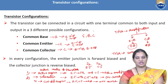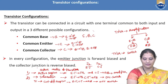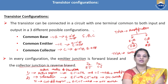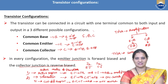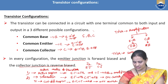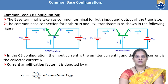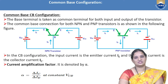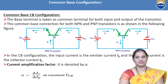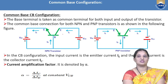Now let us look into the common base configuration. We have NPN and PNP transistors. In common base configuration, the base terminal is the common terminal for both input and output. The input terminal is the emitter and the output terminal is the collector. The weak signal is applied between the emitter and base terminal, and the amplified output is taken between the collector and base terminal.